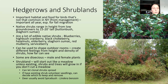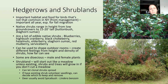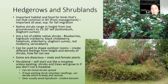Hedgerows and shrublands are important habitat and food for birds — not that common in New York since there's a lot of lawn and woods but not much in-between landscape. Native shrubs have a big range in height, from low bush blueberry at a couple of feet tall to 15 to 20 foot tall shrubs like buttonbush and staghorn sumac. Make sure you know the mature height of what you're planting and whether it's the right size for what you want.